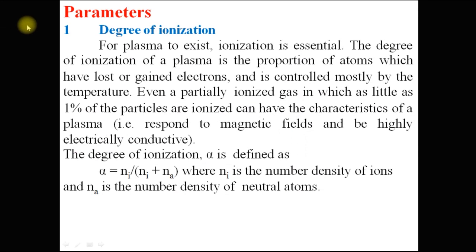Coming to the parameters of plasma: the first parameter is degree of ionization. For plasma to exist, ionization is essential. The degree of ionization is the proportion of atoms which have lost or gained electrons, and is controlled mostly by the temperature. Even a partially ionized gas in which as little as 1% of the particles are ionized can have the characteristics of a plasma. The degree of ionization, denoted by alpha, is defined as alpha equal to Ni upon Ni plus Nn, where Ni is the number density of ions and Nn is the number density of neutral atoms.